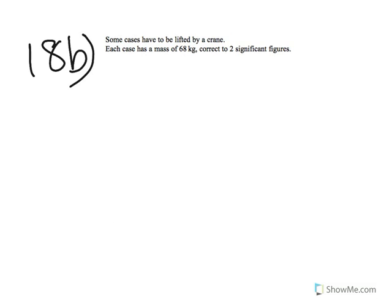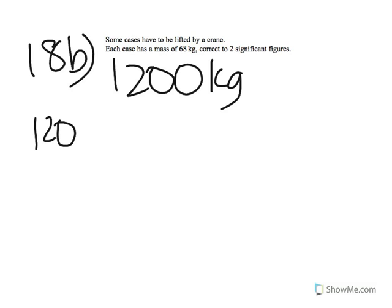In 18B, they're asking: find the greatest number of crates that the crane could safely lift in one load. The crane can safely lift 1,200 kg. Normally we would just do 1,200 divided by 68. However, the key word is 'greatest amount, safely.' Safely means they want the lower bound of the amount of crates it can carry, because the lower bound is a safe amount — going to the upper bound would mean going over the limit.